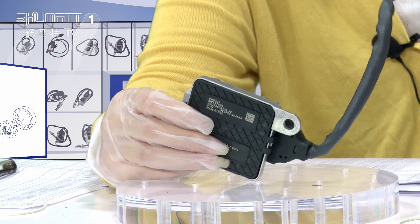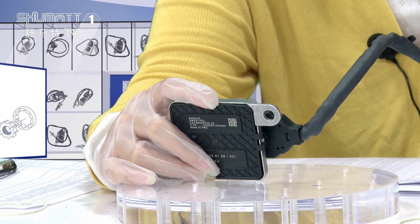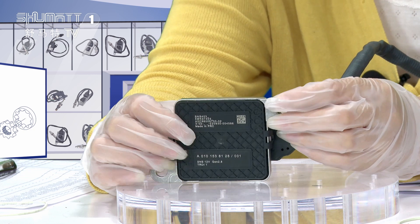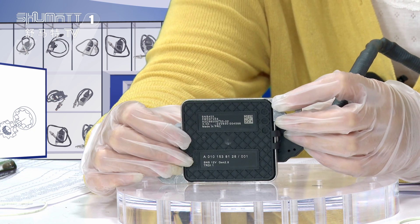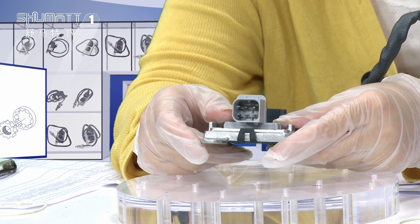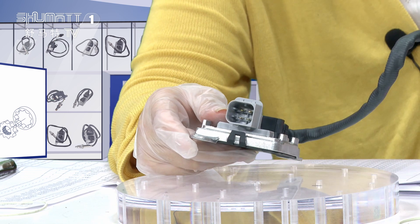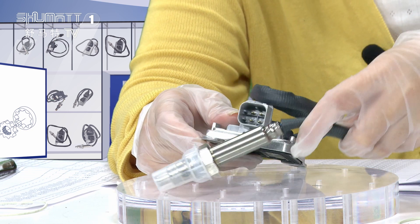The third part is the control module with the label information including the QR code, product code, and CE marking. Regarding the warranty time, we supply six months quality guarantee.